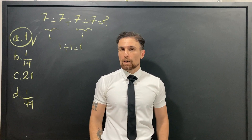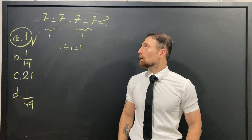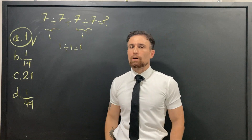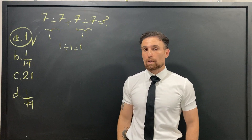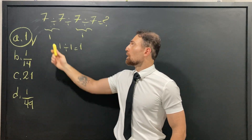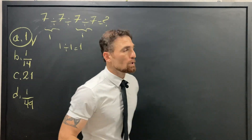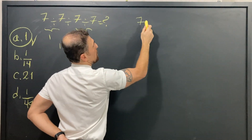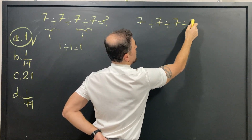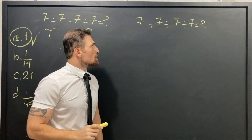The order of operations says: when we have more than one division in one expression, we need to start from the one on the left and continue our work to the right. So let me rewrite the question: 7 ÷ 7 ÷ 7 ÷ 7.